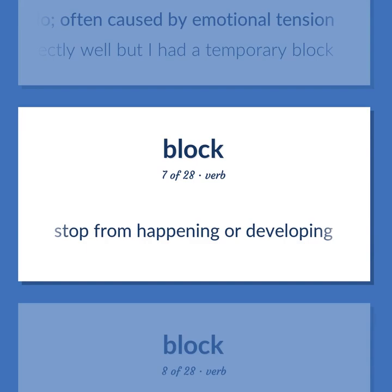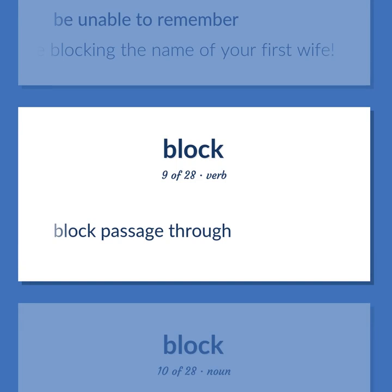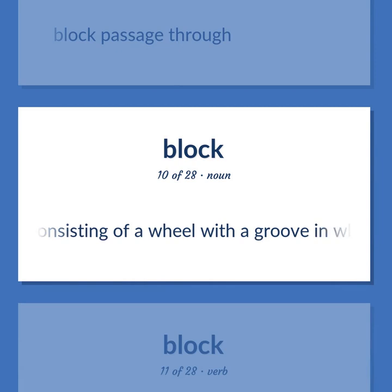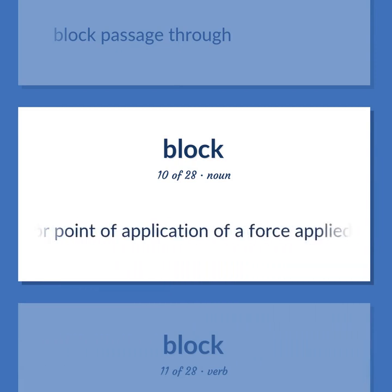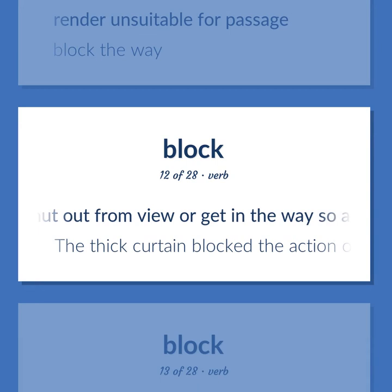Stop from happening or developing. Be unable to remember — you are blocking the name of your first wife. Block passage through. A simple machine consisting of a wheel with a groove in which a rope can run to change the direction or point of application of a force applied to the rope. Render unsuitable for passage — block the way. Shut out from view or get in the way so as to hide from sight — the thick curtain blocked the action on the stage.